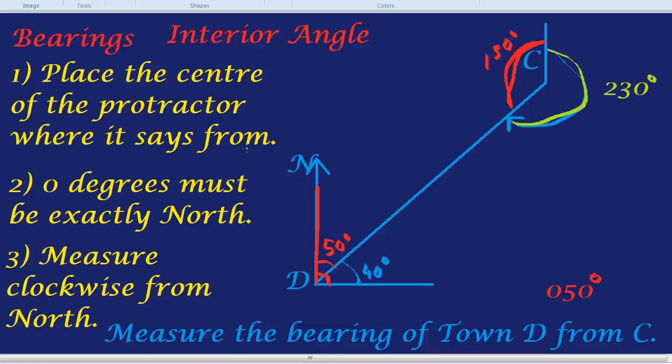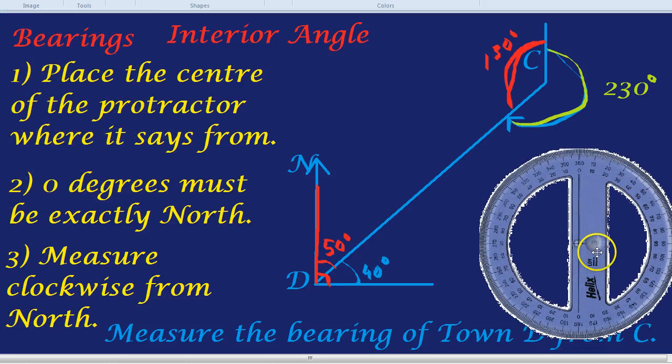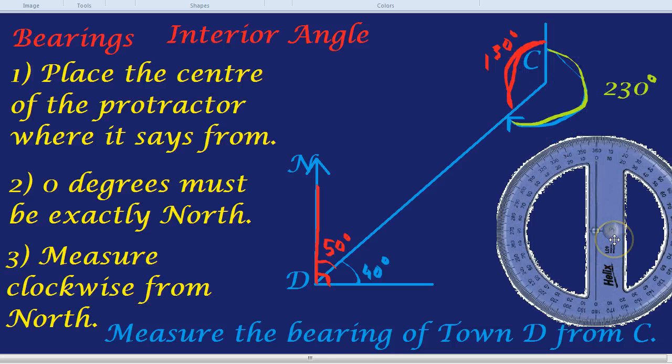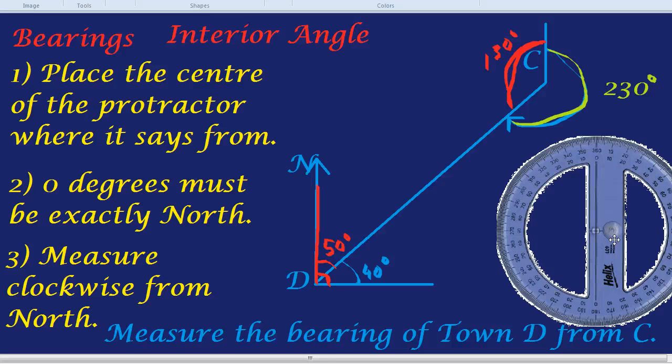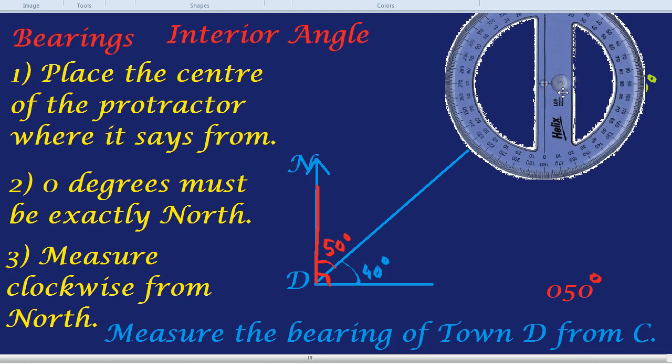Then, make sure 0 degrees is north. So, if you had a protractor like so notice how 0 degrees is north and if I was doing town C again we can check how accurate my line measurement is because I'm placing it at the centre of the protractor at C.